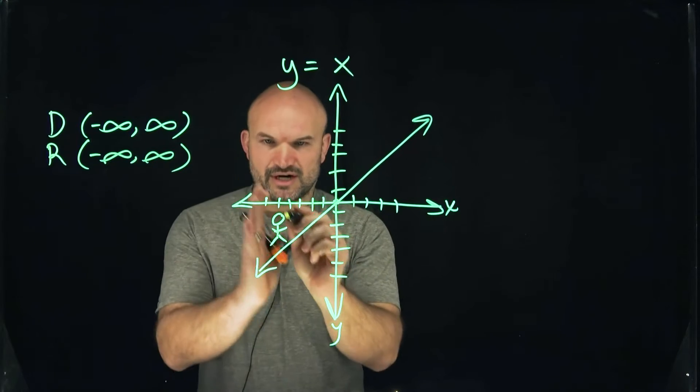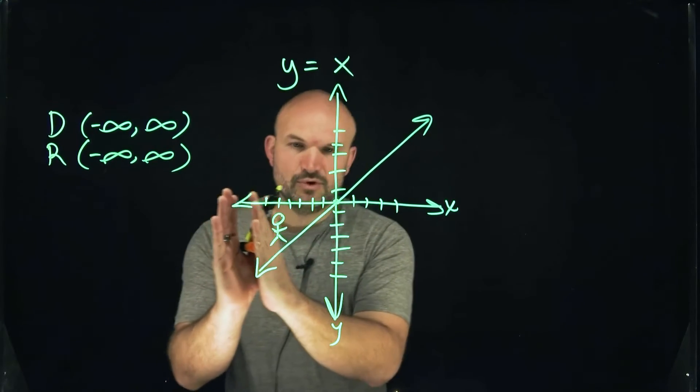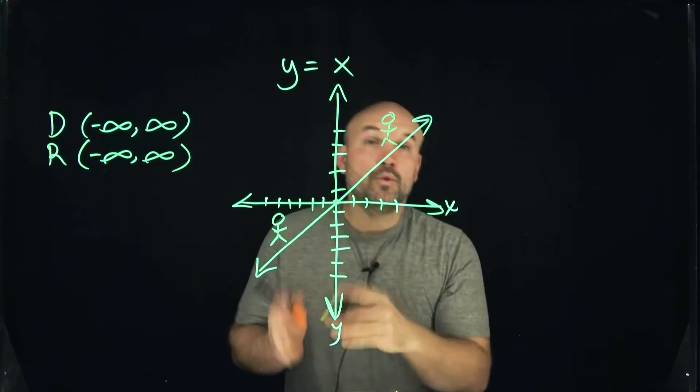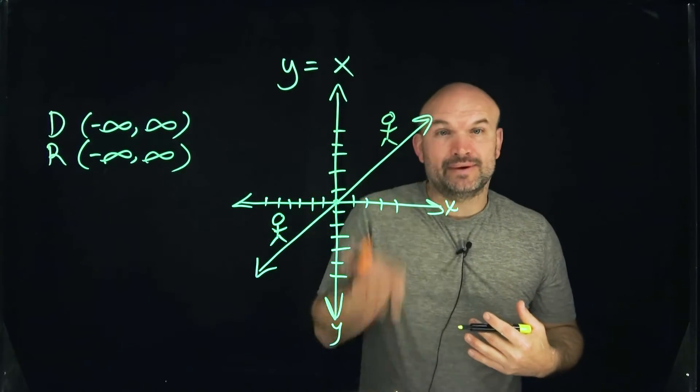We'll start this person here on the left-hand side of the graph and just move to the right. As we're moving over to the right, this little person is going up. The y values that this person is addressing from left to right is going up.